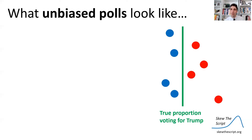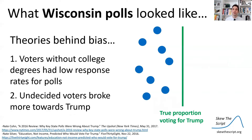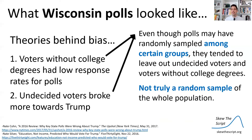Unbiased polls should look like this: some will underestimate and some will overestimate the true proportion voting for Trump. But Wisconsin's polls were biased because they consistently underestimated. There are a couple of theories behind this bias. One, voters without college degrees had low response rates for polls, and those voters tended to pull more for Trump. And two, undecided voters tended to break more towards Trump when they got to the election booth. So if polls left out those groups, they weren't getting a truly random sample of all voters, resulting in biased polls.